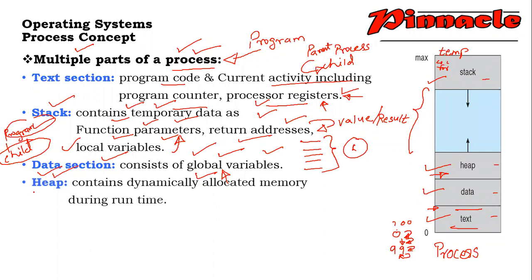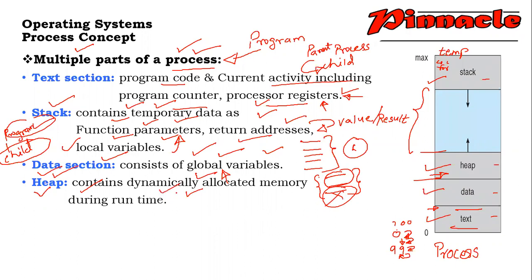Next is the heap section. The heap contains dynamically allocated memory during runtime. If we assign a fixed memory to a program or process first, we may not know exactly how much space it needs — it may result in wasted space. So, for effective allocation of memory, that is dynamically allocated memory, it is stored in the heap part.